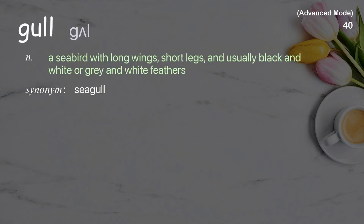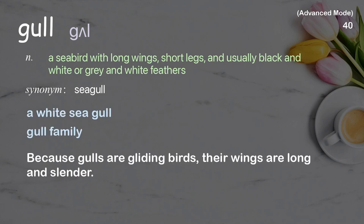Gull: A seabird with long wings, short legs, and usually black and white or gray and white feathers. Examples: a white seagull, gull family. Because gulls are gliding birds, their wings are long and slender.